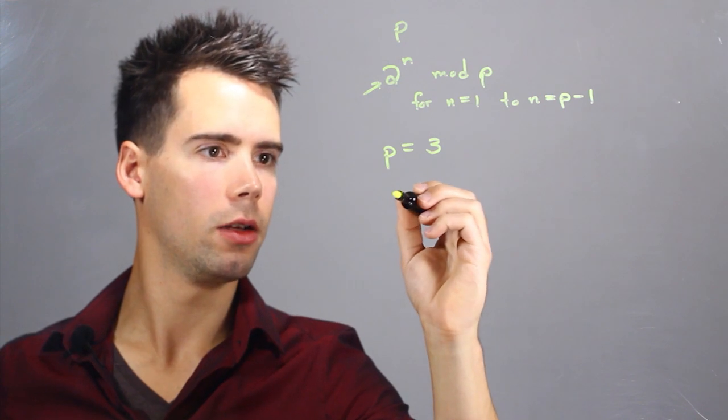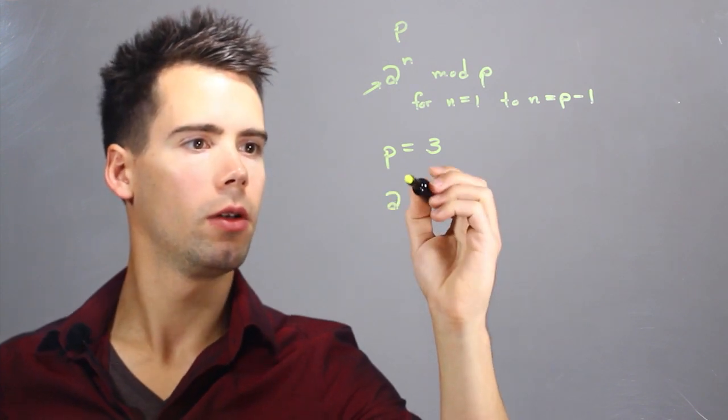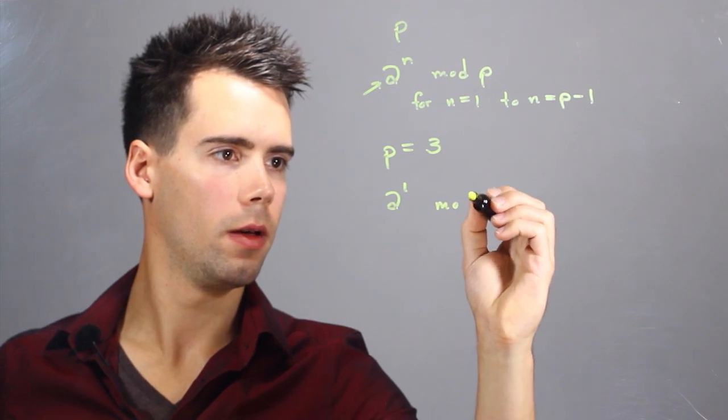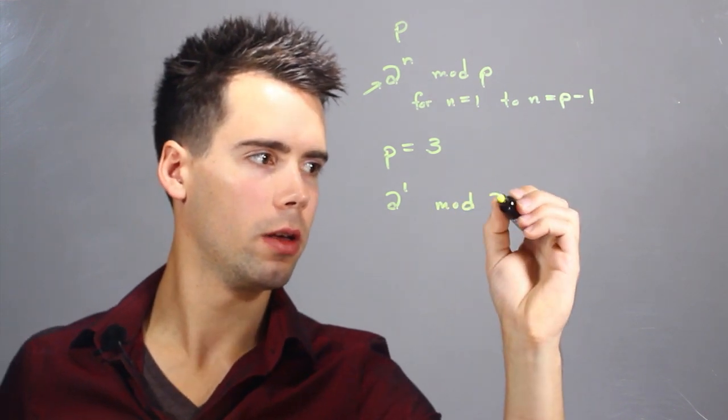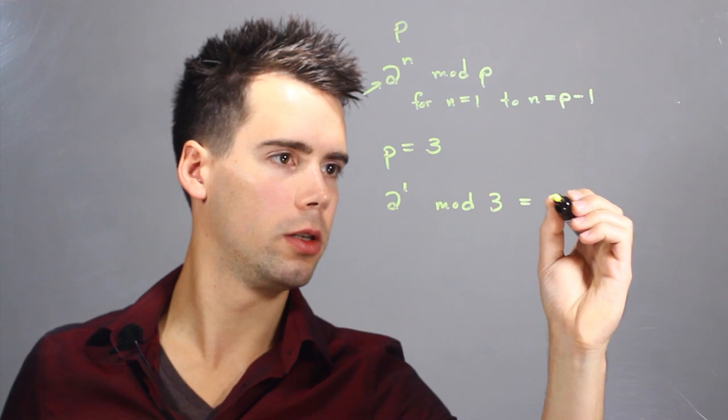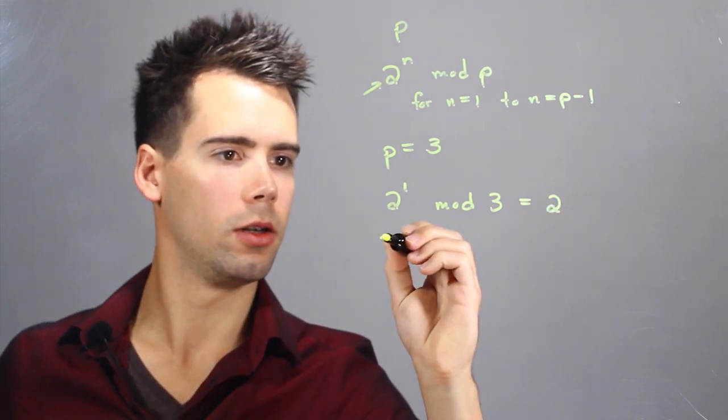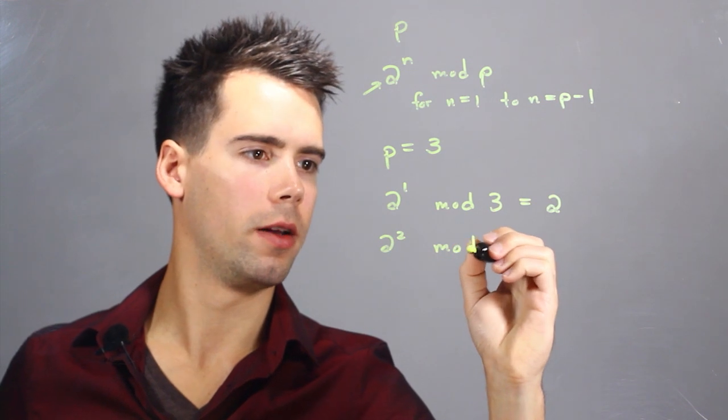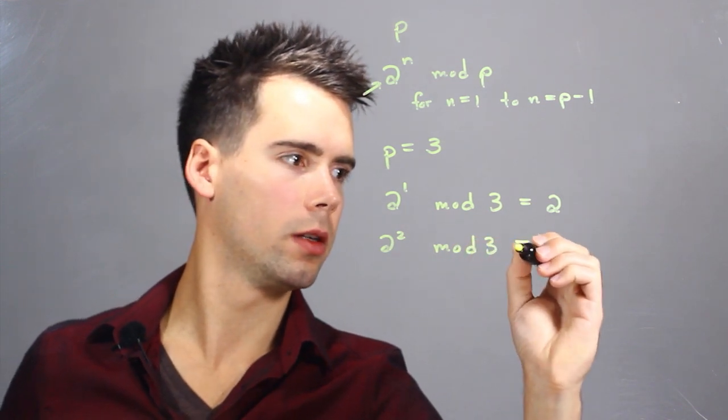So we find that 2 to the 1 mod 3 is equal to 2 and 2 to the 2 mod 3 is simply equal to 1.